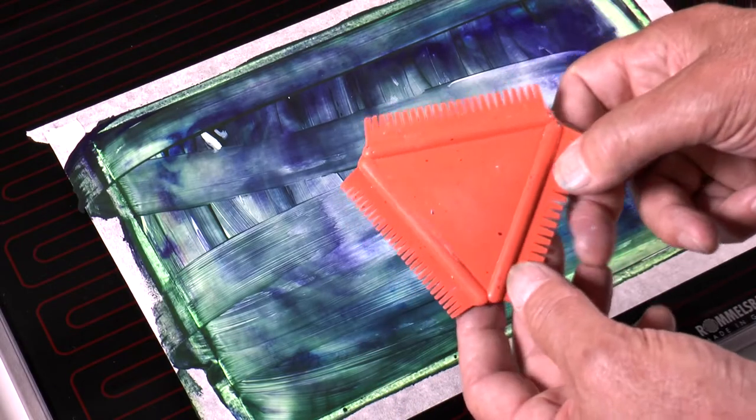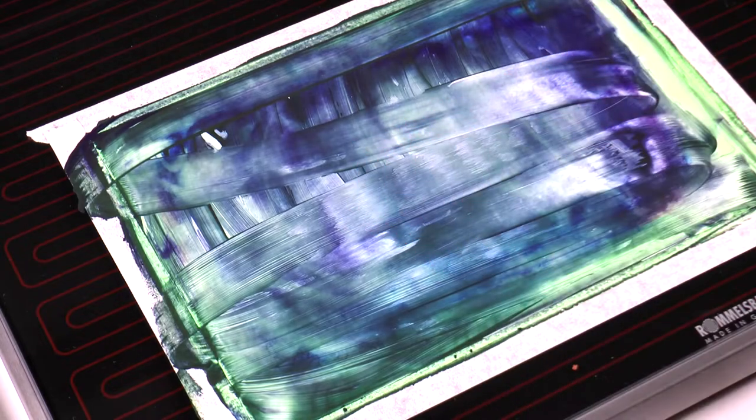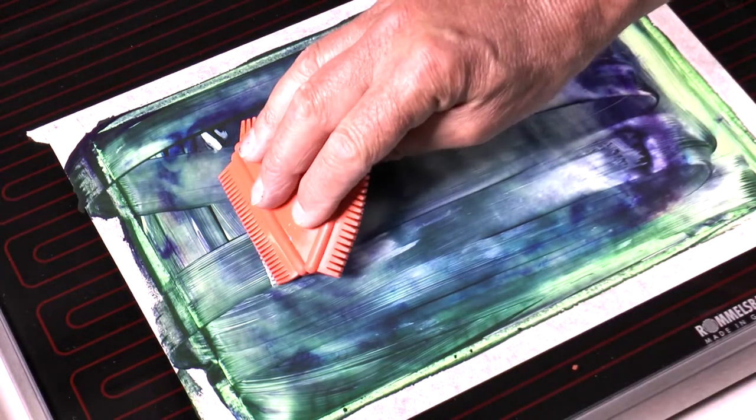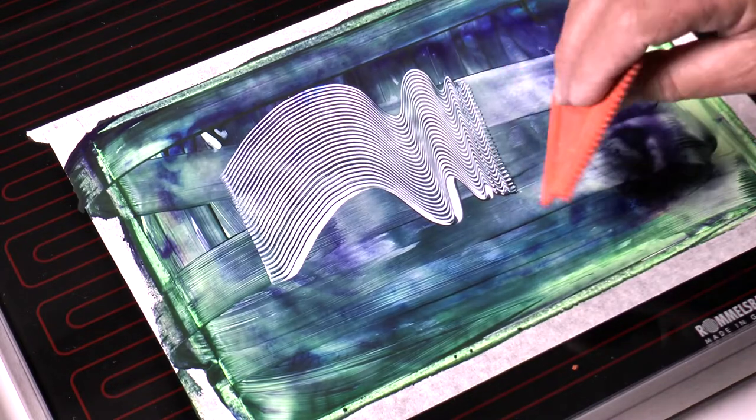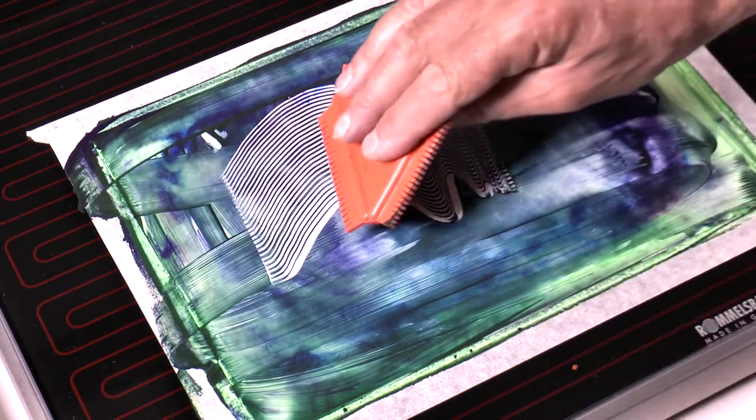The encaustic art rubber comb has got three edges with different sized teeth. These are used to move molten wax and as you can see you can get very dimensional lines by doing that.